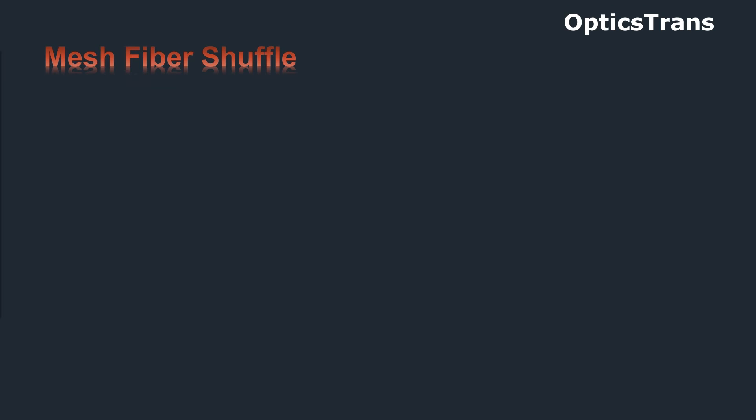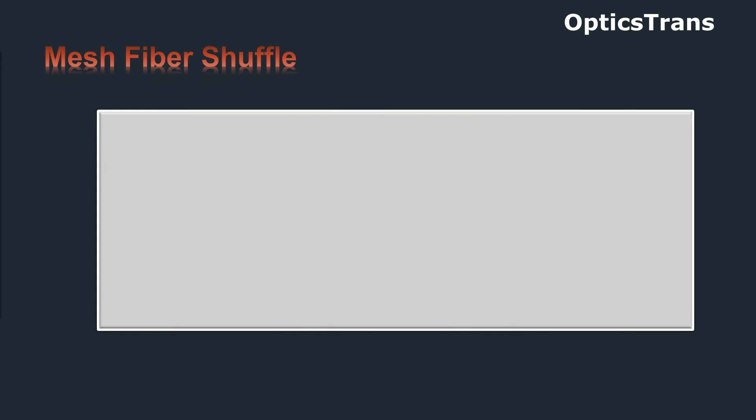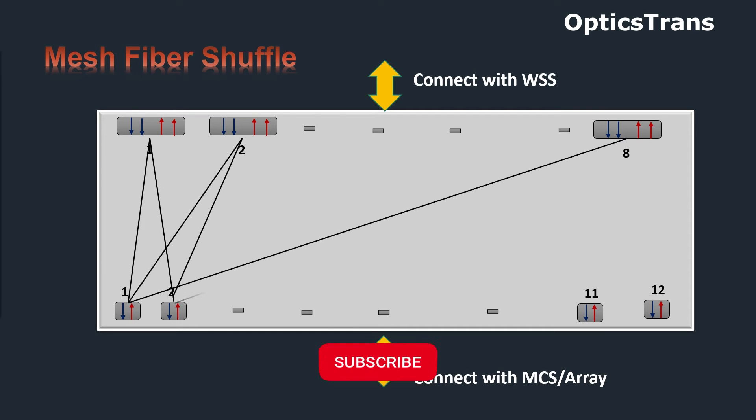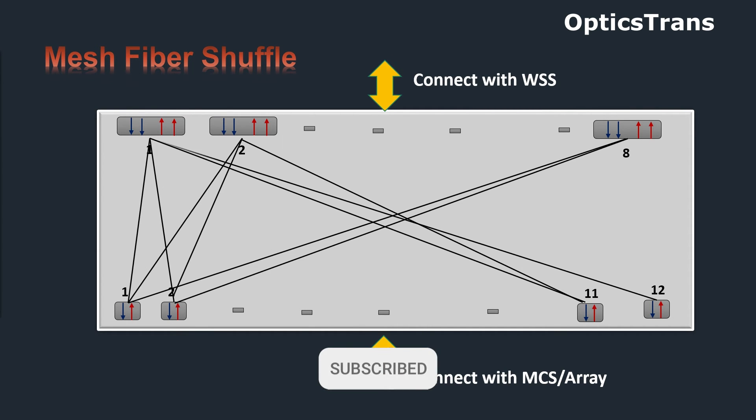Next is mesh fiber shuffle card, also called FSM fiber shuffle module. This card has around 12 ports, and on that side it connects with multicast switch card or array card using MPO cable. On other side, this card having eight ports, and output will connect with different WSS for eight directions using MPO cable. These 12 ports are interconnected with eight ports using internal fiber routing to add or drop the signal.